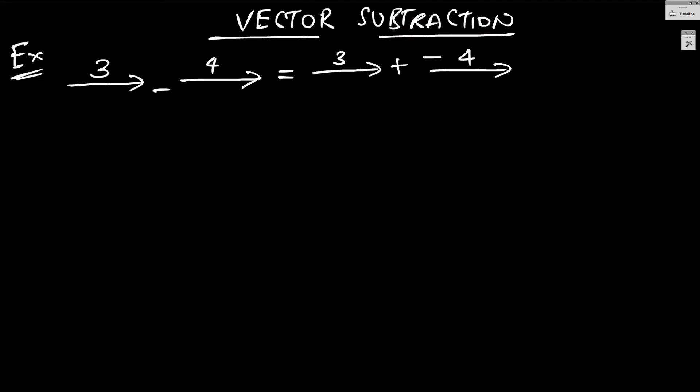Alright, so we can write this now as vector 3 plus vector 4. You see I have flipped the direction and so subtraction can be converted to addition and we know how to add. That's easy. So they are trying to cancel each other out and you get 1.